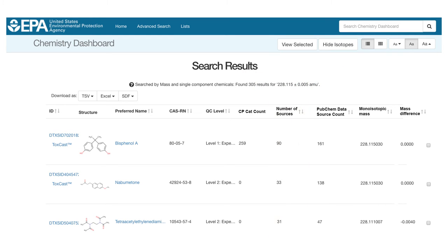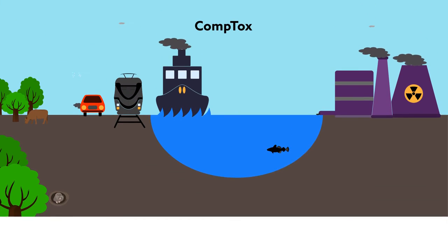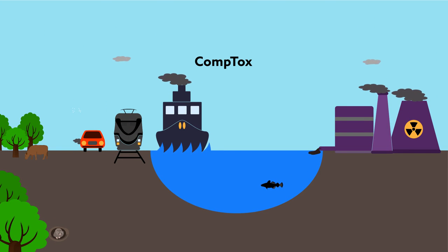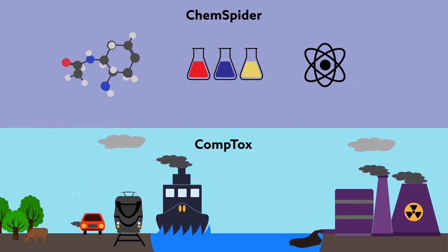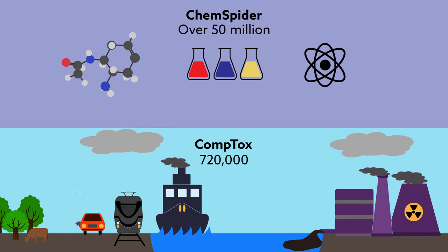The difference lies in how those data sources are managed. The dashboard's highly curated database is limited to chemicals relevant to environmental health science, whereas ChemSpider caters to all walks of chemistry. That contrast is reflected in the number of chemicals in each database—720,000 versus over 50 million.